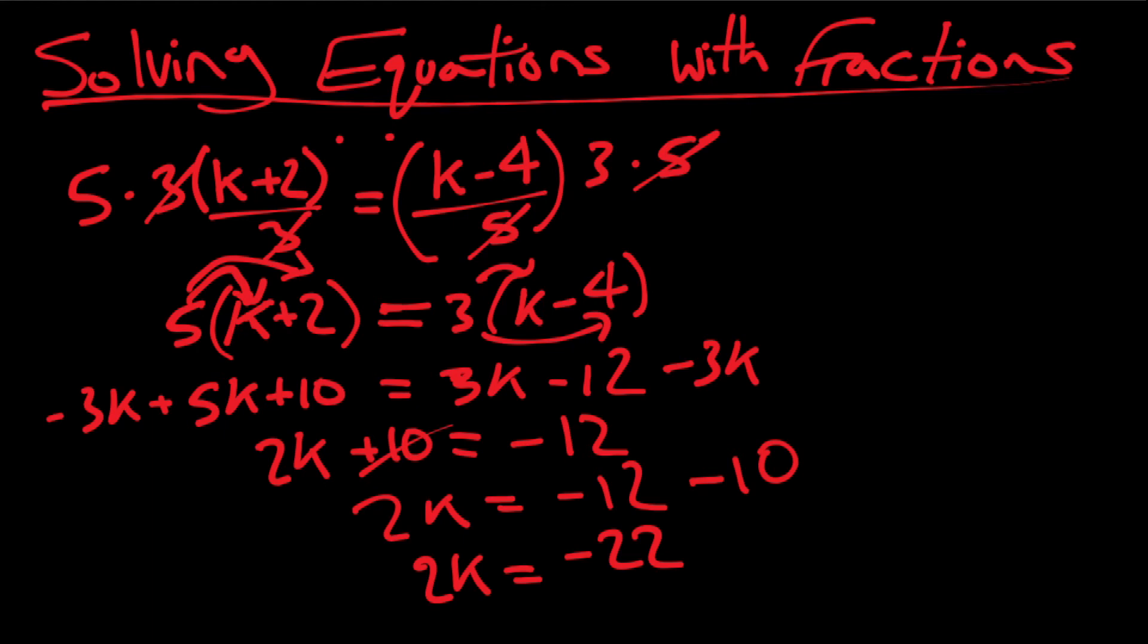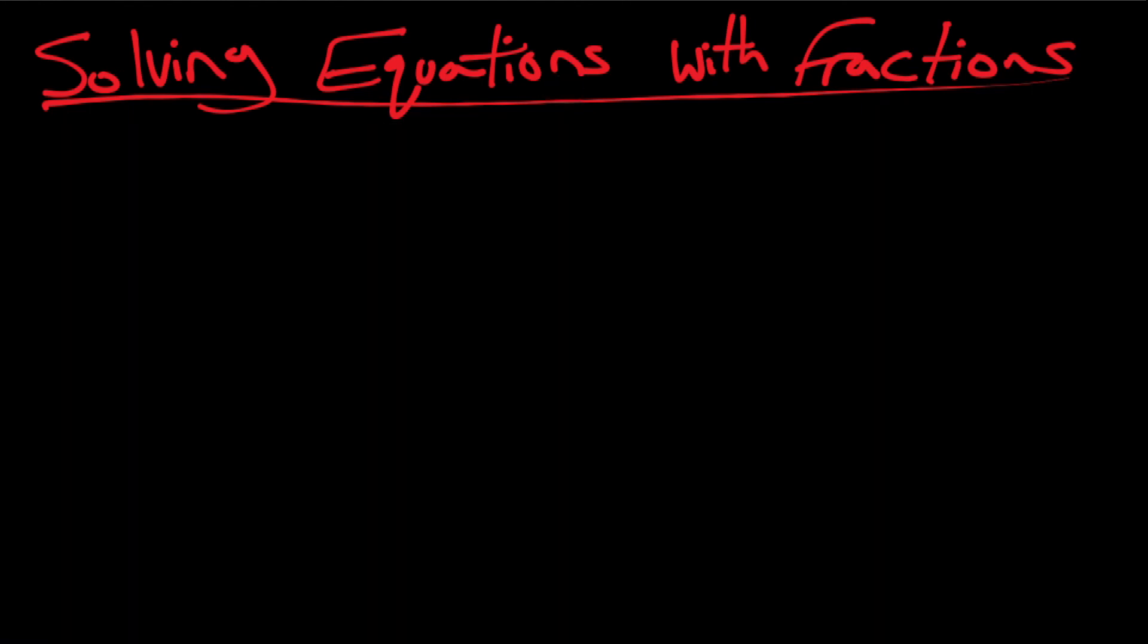So how do I get k by itself? Simple. So I'm gonna divide by two both sides, and I'm left with k equals negative 11. Okay. Seems simple enough. Just take it one step at a time, just like we take one day at a time.